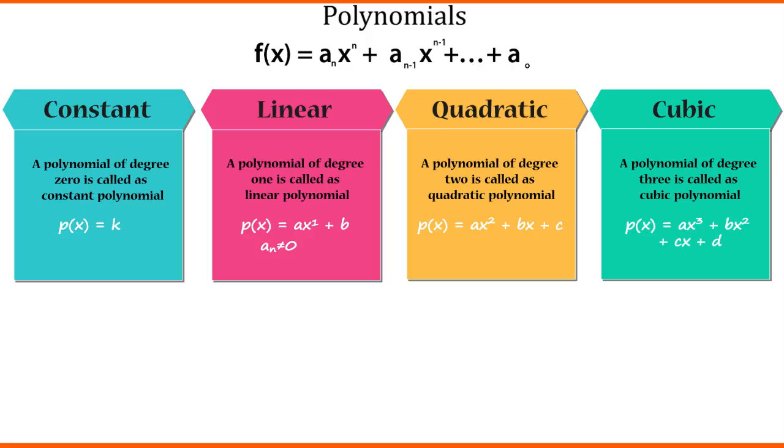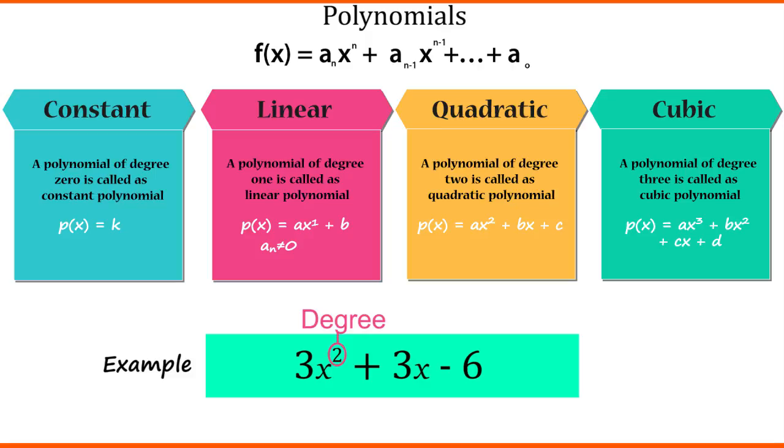Now friends, let's understand the terms. Suppose we have a polynomial 3x square plus 3x minus 6. Here, 2 is called the degree and x is the variable as we don't know its value. The numbers in front of variables are called coefficients and here 6 will be called the constant.